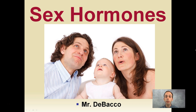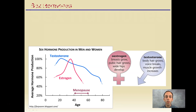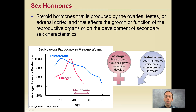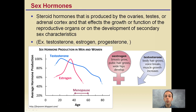Here we're going to cover a special classification of hormones called sex hormones. These sex hormones are steroid hormones and they're produced by the ovaries, testes, or adrenal cortex. They affect both growth and function of reproductive organs as well as the development of secondary sex characteristics. The three we're going to focus on in this lecture series are testosterone, estrogen, and progesterone.